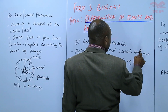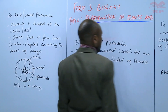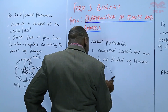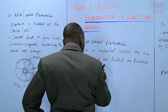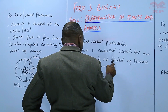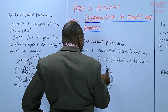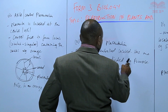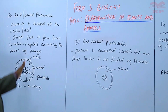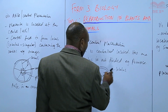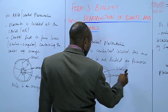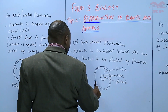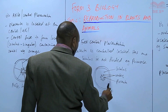An example of free central placentation is in the primrose fruit. It looks almost like the axial type — the placenta is centrally located — but the seeds or ovules are located there within a single loculus. It is not divided into compartments like in axial placentation. So we have the ovules and then the placenta, and this is what we call free central placentation.